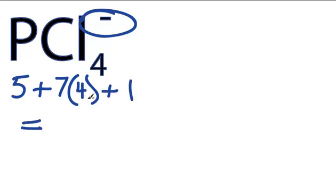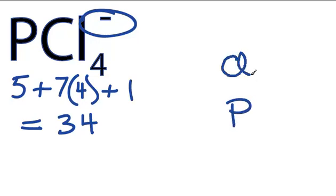5 plus 28 is 33, plus 1 is 34 valence electrons. We'll put the phosphorus at the center, and then we can put the chlorines around the outside here.